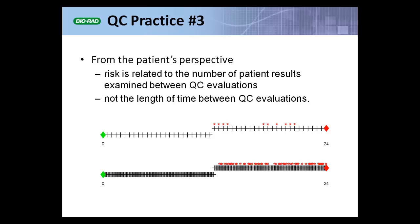So patient risk isn't related to the 24 hours — it's related to the number of patients tested between those two QC events. Go ahead and schedule by time, but be aware of the average number of analyte examinations you're doing between QC events. It's going to differ for every analyte, but risk, from the patient's perspective, is related to the number of analyte examinations between QC events.